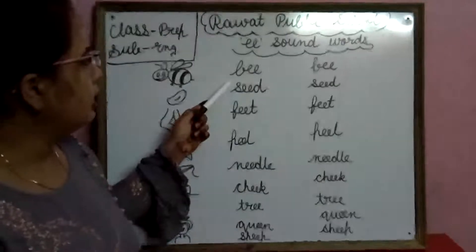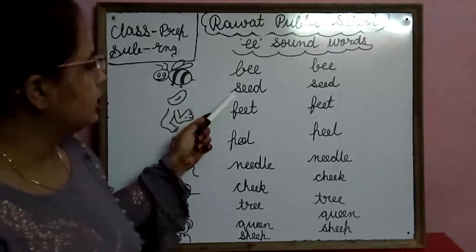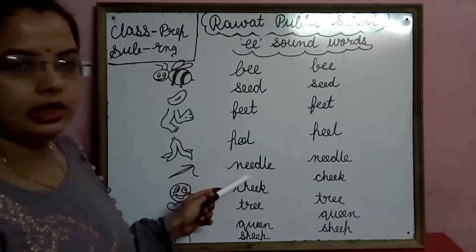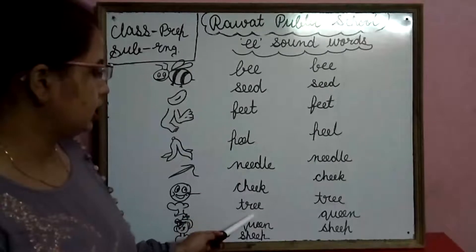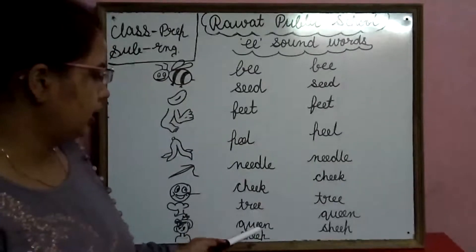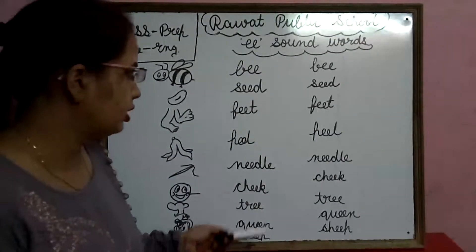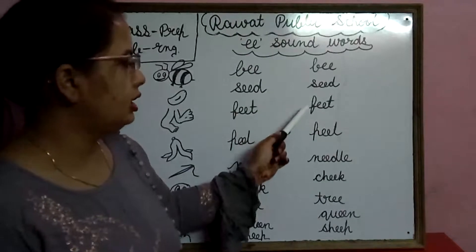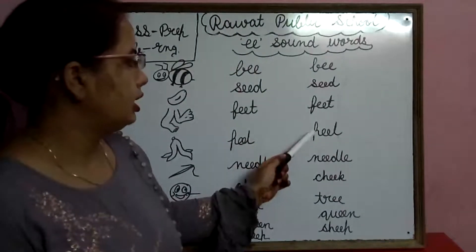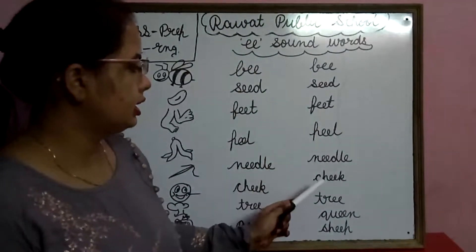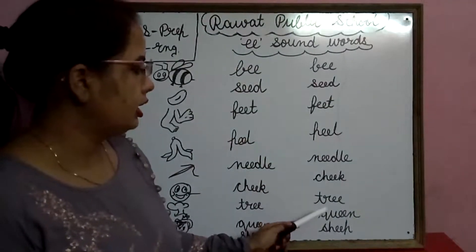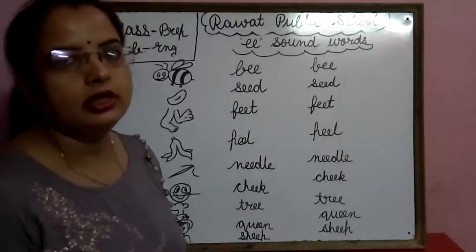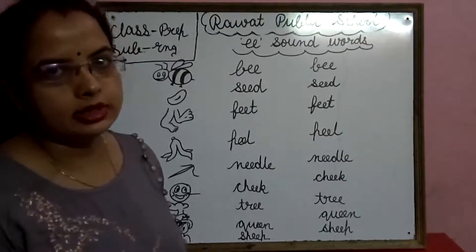Bee, sheep, feet, peel, needle, cheek, tree, queen, sheep. Once again: bee, sheep, feet, peel, needle, cheek, tree, queen, sheep. These are our double E sound words.